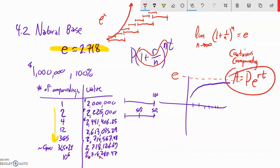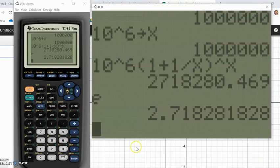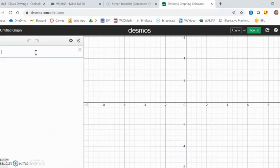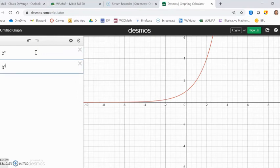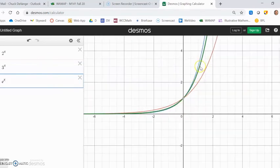So my continuous compounding then is just my principle times e to the power of RT. PERT. I want to take a quick look at a graph. Here's 2 to the X. Here's 3 to the X. So how about e to the X? Since it's about 2.7, it should be right between them. And it is.